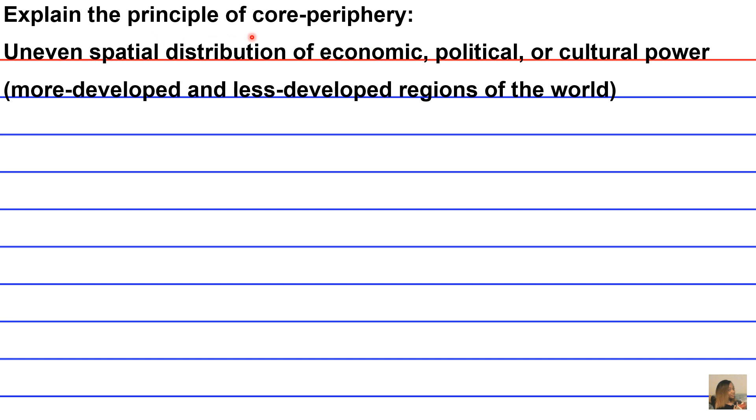So if you're referring to a core nation or core country, that would be a more developed nation in terms of economics and maybe even political structure. Whereas if you use periphery nation or periphery country, you're referring to a less developed region of the world.